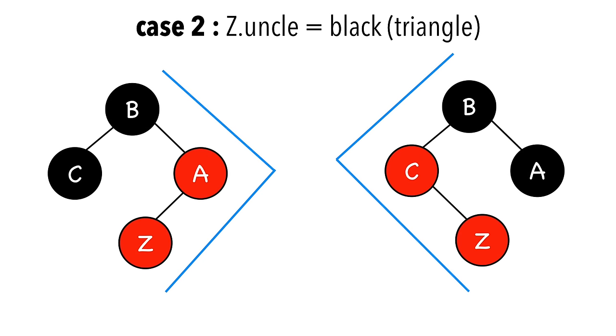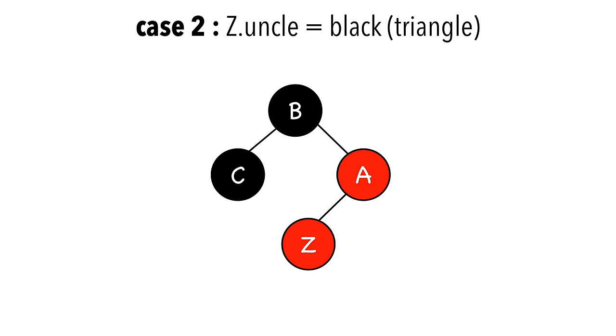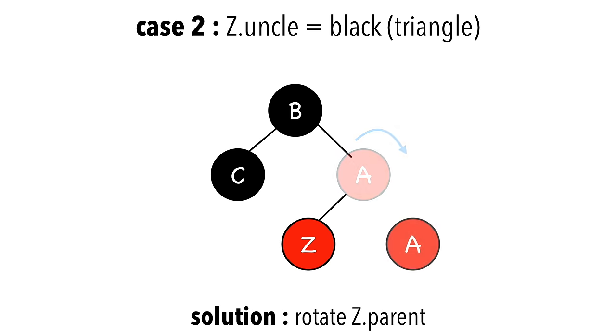You might also see the triangle case like this, where Z is a right child and its parent is a left child. Same thing, just symmetrical. When we encounter this case, we rotate Z's parent, doing so in the opposite direction of Z. So Z takes the place of A. Nothing too tricky.